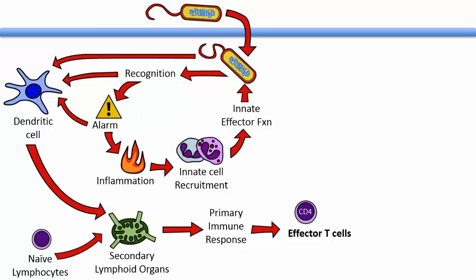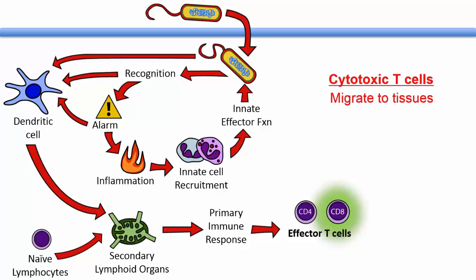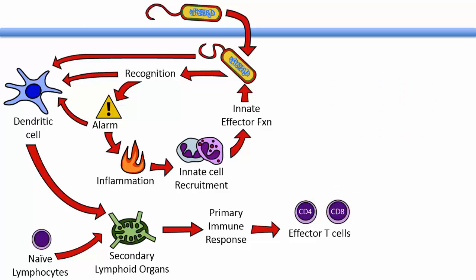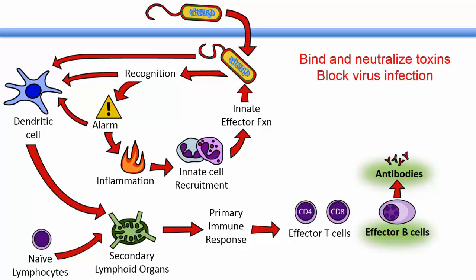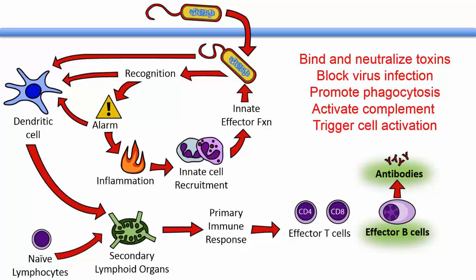The second cell type activated is effector CD8-positive T cells or cytotoxic T cells. These cells migrate into tissues and kill infected or abnormal cells. The third cell type activated is effector B cells, which make antibodies. These antibodies bind to and neutralize toxins, block virus infection, promote phagocytosis, activate complement, and trigger the activation of other cell types.